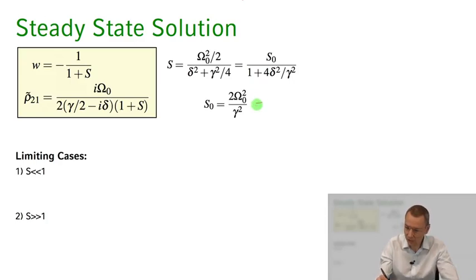let's consider, let's just write this again as intensity divided by some saturation intensity. Now let's consider the case where the saturation parameter is much smaller compared to one.